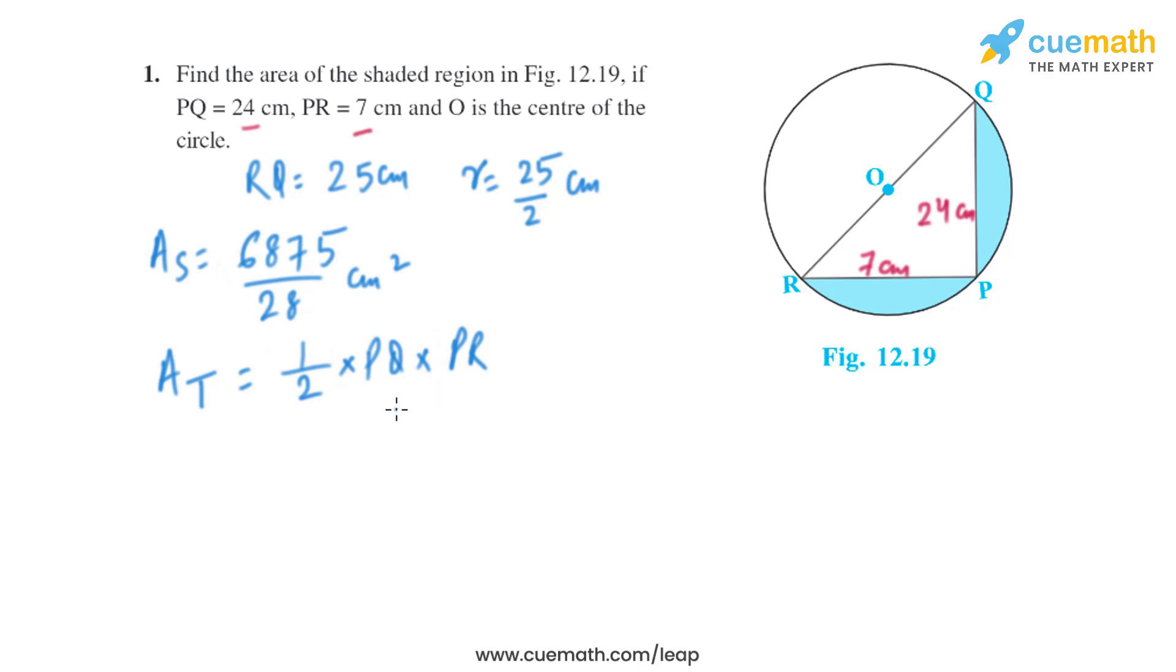Now let's find the area of triangle. That is half into base into height, which is half into PQ into PR. We know the length of PQ and PR, so it will be half into 7 into 24. On solving this, we'll get the area of triangle as 84 square centimeters.